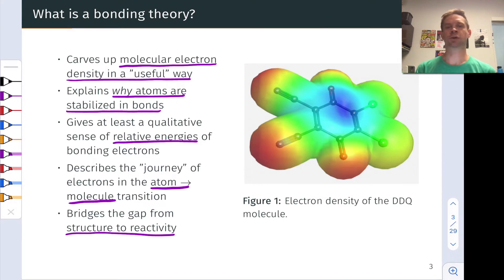We can use a lot of our intuitive ideas about where electrons are located in Lewis structures to infer ideas in valence bond theory. And I wanted to start again with this picture of DDQ to remind us that what we're going to do here is really conceptualize the molecular electron density.